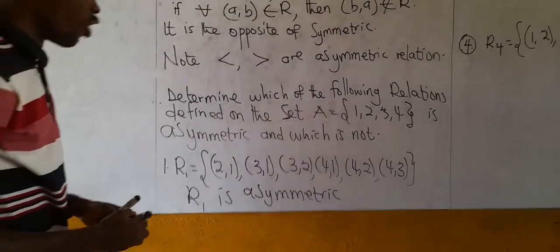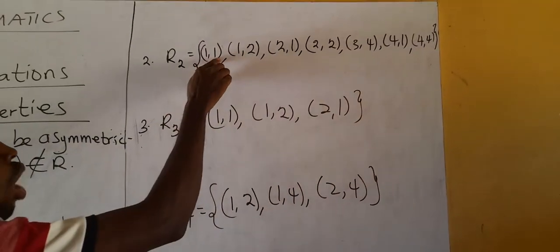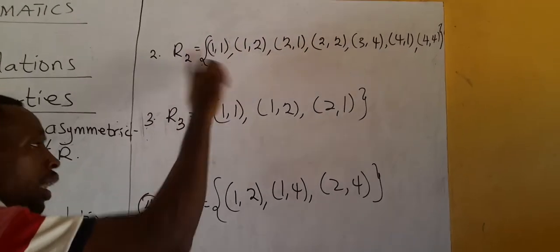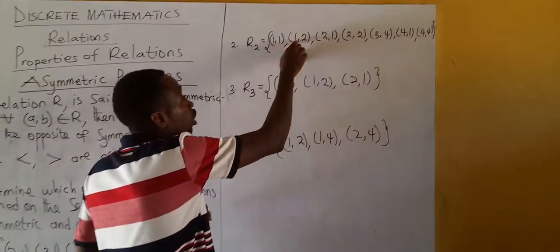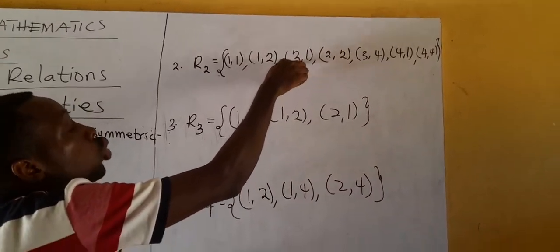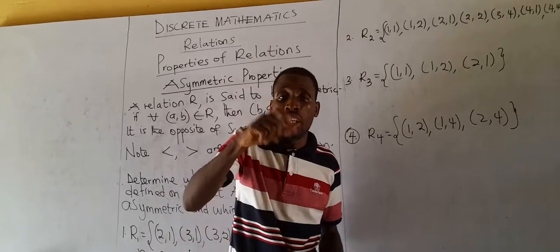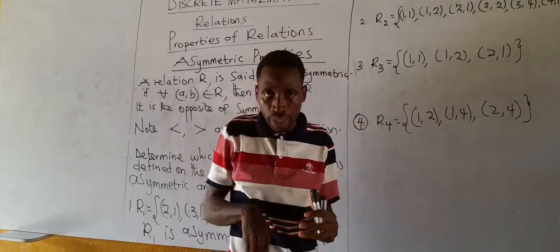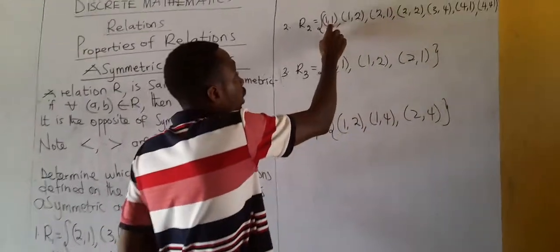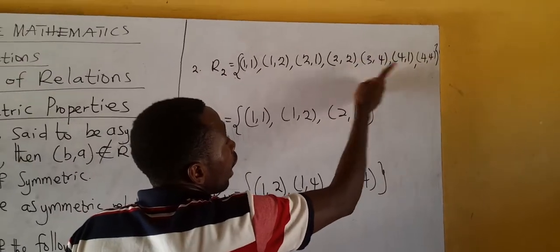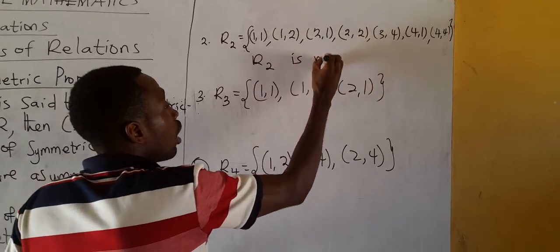Now let's check R2. Flip (1,1) → still (1,1); it's a member — that alone disqualifies R2 from being asymmetric. A self-loop is when an element relates to itself; if a self-loop exists in the relation, it immediately ceases to be asymmetric. Also, flip (1,2) → (2,1); it's a member — another reason. So R2 is not asymmetric.